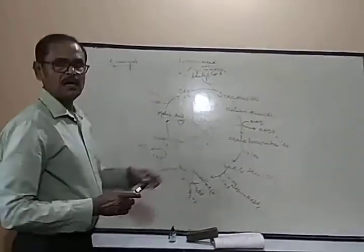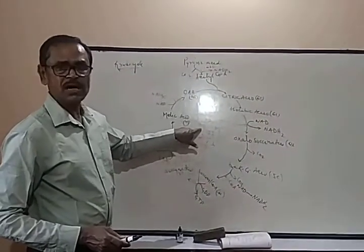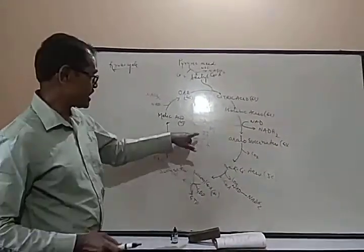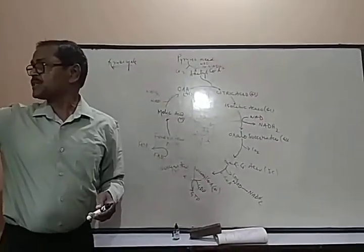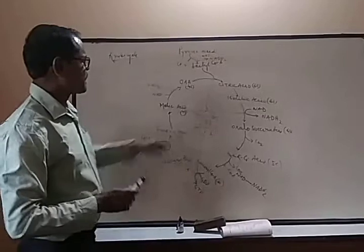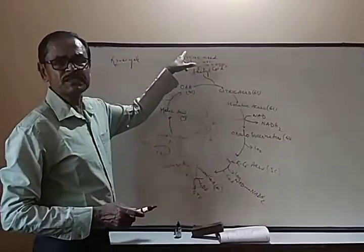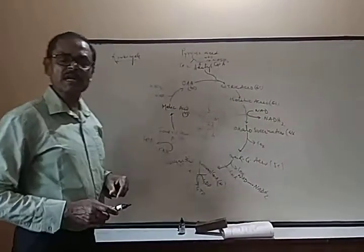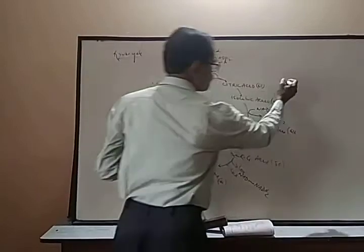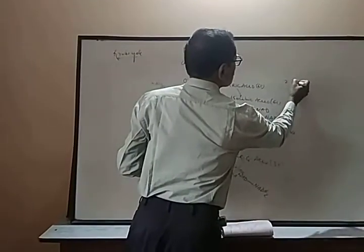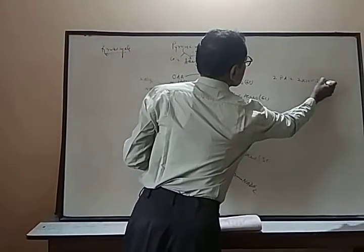You see 3, 3, 3, 9, 10, 12, 15 ATP we are getting here. And you see here that this 15 ATP we are getting from 1 mol pyruvic acid. But actually in glycolysis we have got 2 mol pyruvic acid. So 1 mol, by 2 mol pyruvic acid will produce 2 into 15 equals 30 ATP.